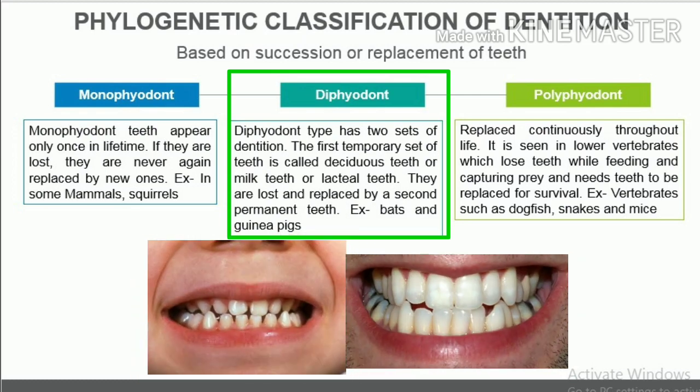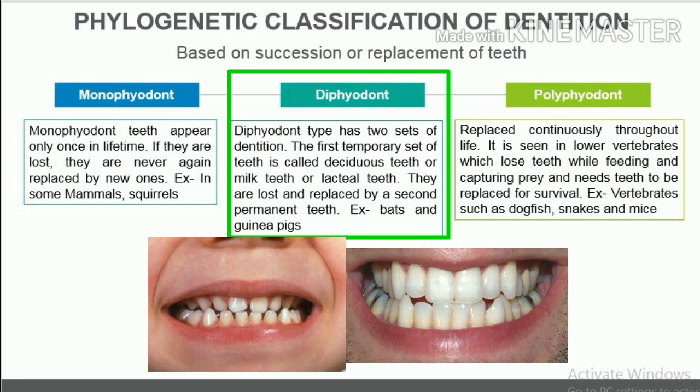Diphyodont type has two sets of dentition. The first temporary set of teeth is called deciduous teeth, milk teeth, or lacteal teeth. They are lost and replaced by a second permanent set. Examples include bats and guinea pigs, where the milk teeth are lost even before birth.